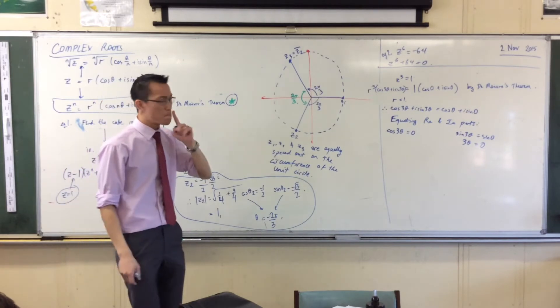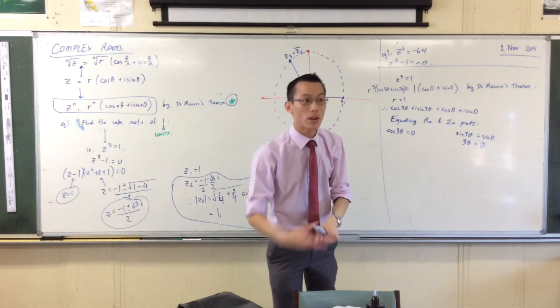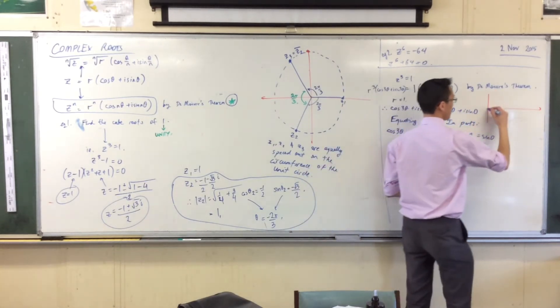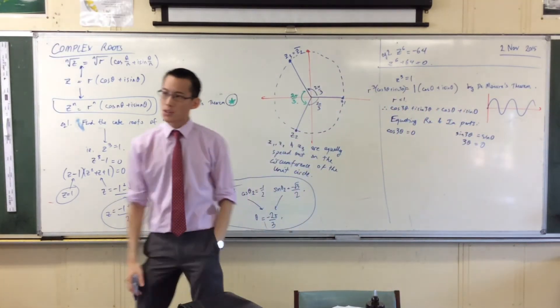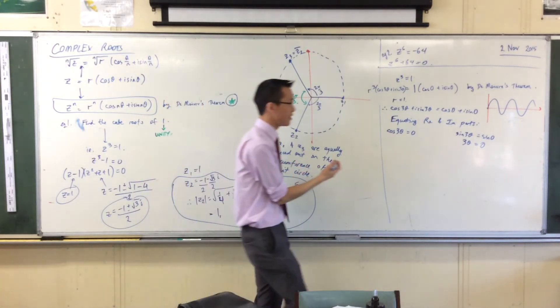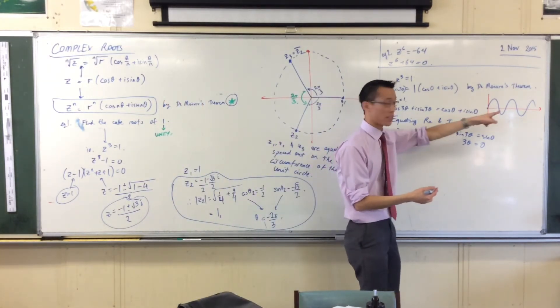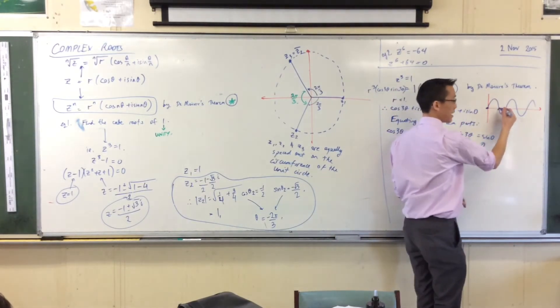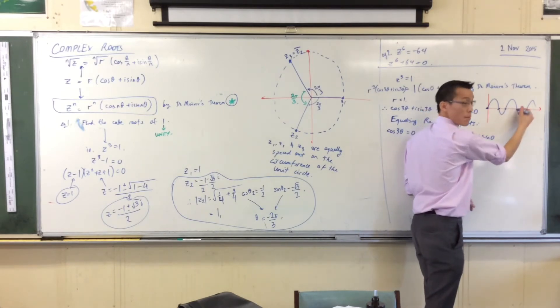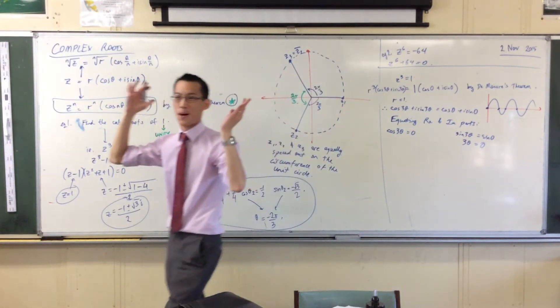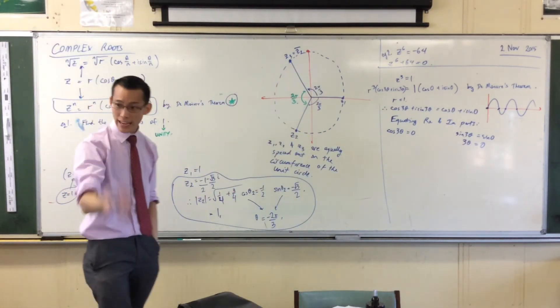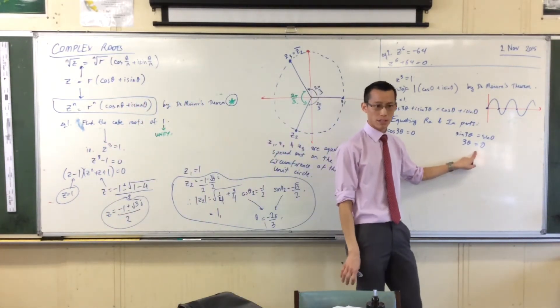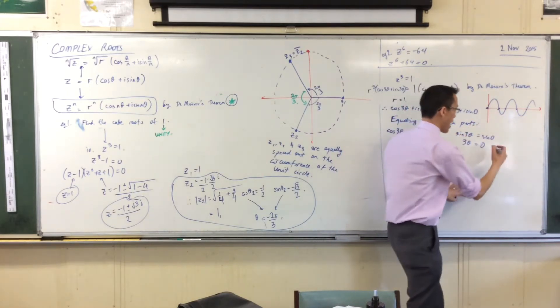But it's not the only solution. Think about what sine looks like again. Here's the sine curve. There's a whole bunch of solutions. In radians, the first one is 0, then π, then 2π, then 3π, 4π - all the multiples of π. I can also go negative: negative π, negative 2π, negative 3π.